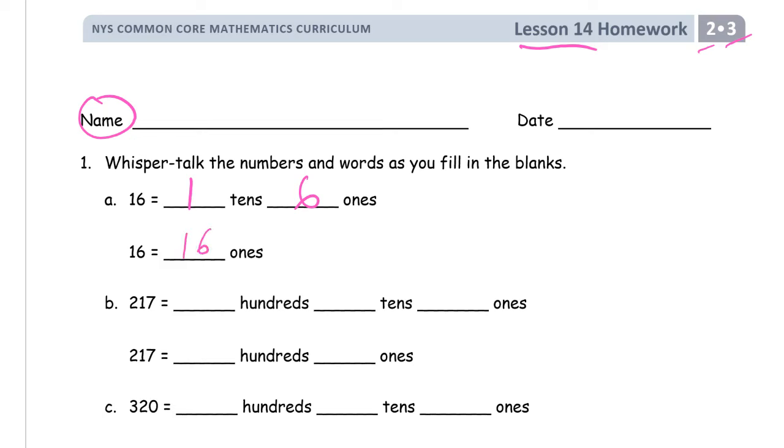So just think about it. If you're using place value disks, how many ones is it going to take to make 16? If you can only use ones, it'll take 16 of them. If you use tens and ones, you can use a ten and six ones.